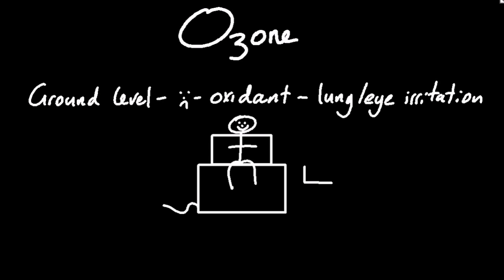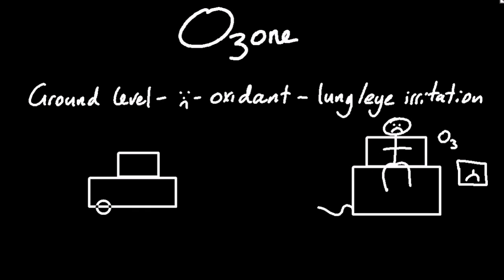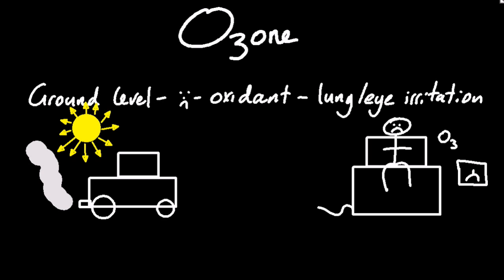Another source of tropospheric or ground level ozone are the emissions from cars. Now car emissions aren't actually ozone, but when they interact with the energy from the sun, ozone is produced. None of this ozone's good.